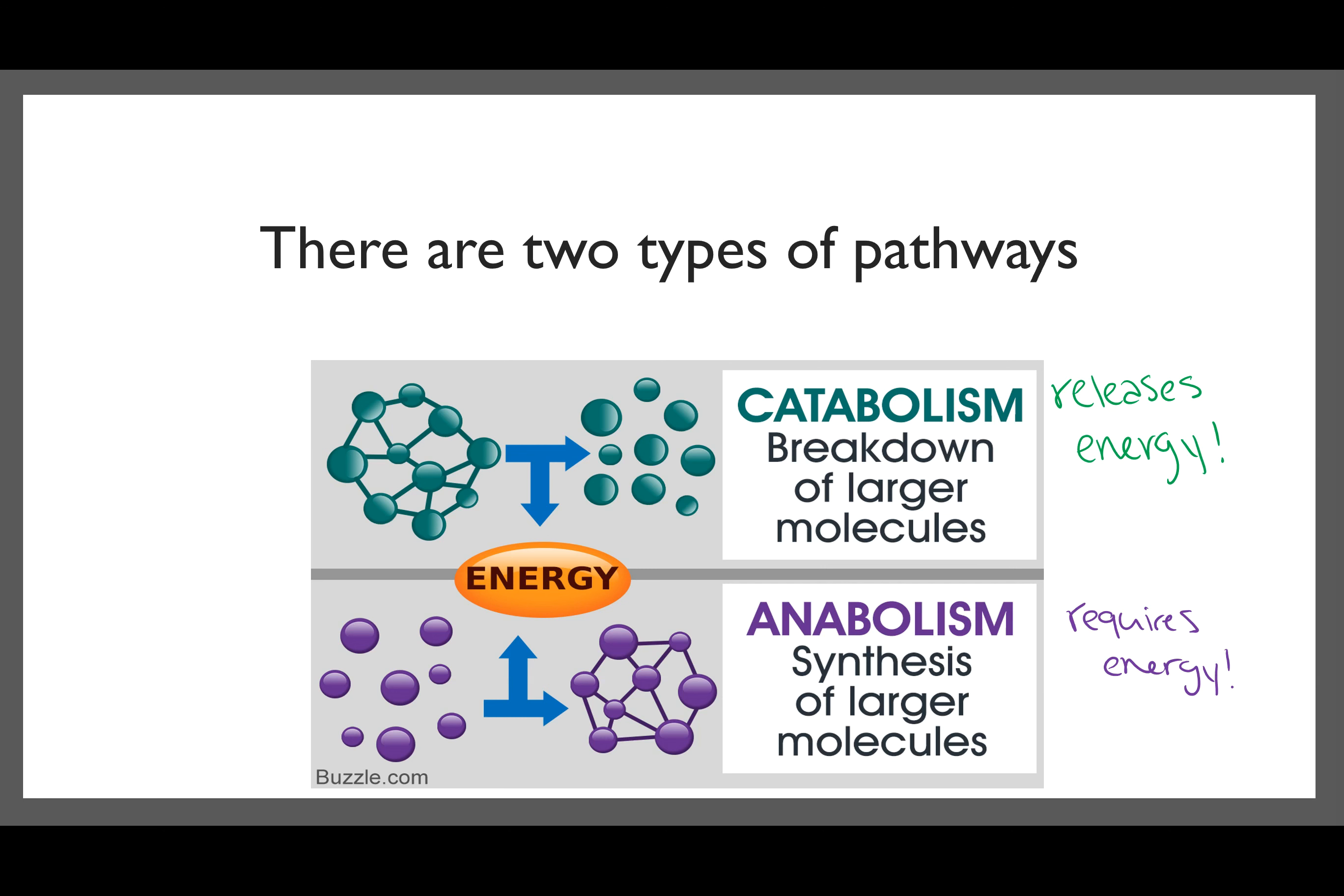There are two types of pathways that we're going to be talking about. The first one is anabolism, which is a synthesis of larger molecules. So it's making smaller molecules into larger molecules, and it requires energy. Catabolism is the breakdown of larger molecules. You have one larger molecule, and you're making it into smaller molecules, and it releases energy.